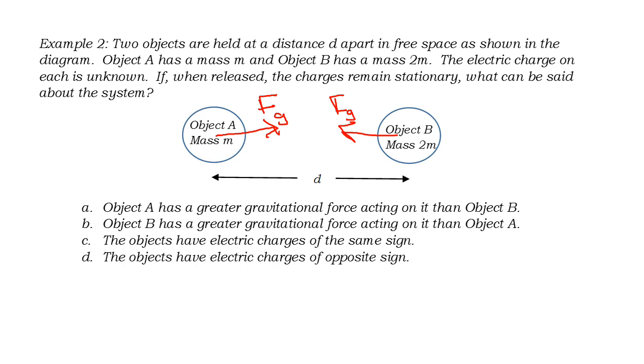Now if when released they remain stationary, the electrical force must be in opposite direction to the gravitational force. This is only possible if the charges on these objects have the same sign.